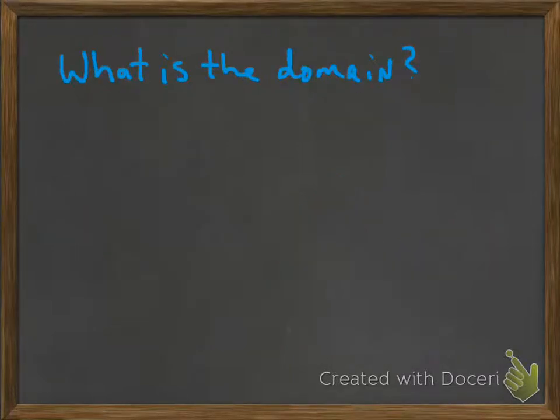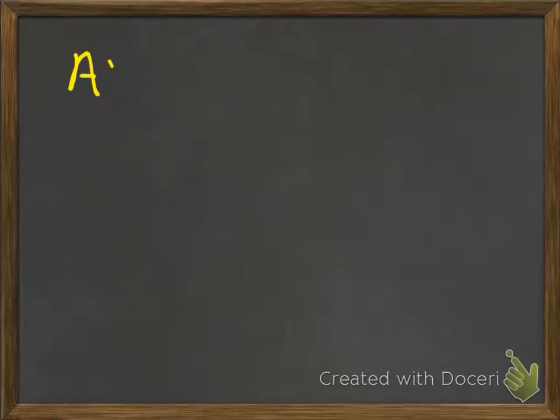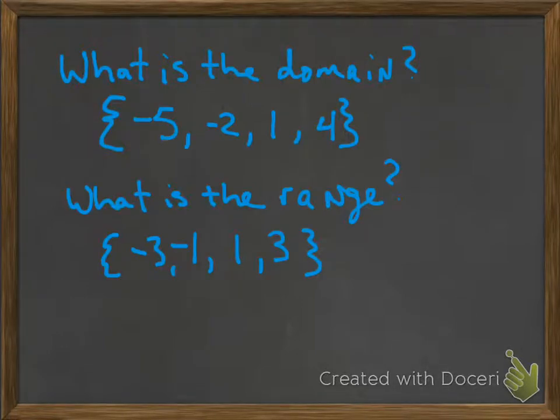So what's the domain? Well, the domain, again, is the x's. So you tell me all the numbers that were x's. Negative 5, negative 2, 1, and 4. What's the range? The range, again, is the y's. So then you tell me all the numbers for the y, which in this case were negative 3, negative 1, 1, and 3. Now, I just put these in order from least to greatest, but you don't have to. So that's something to kind of keep in mind.